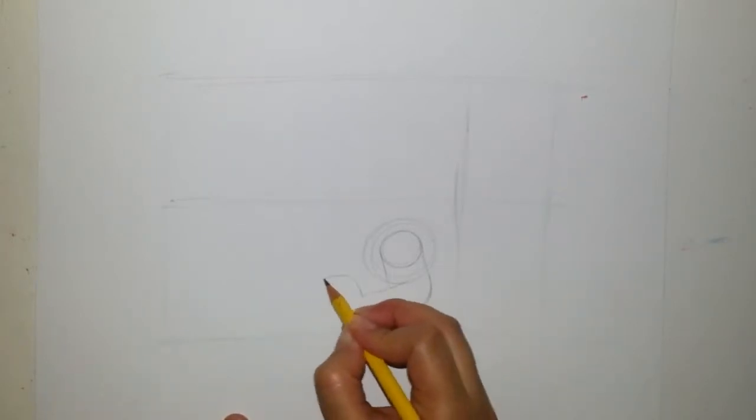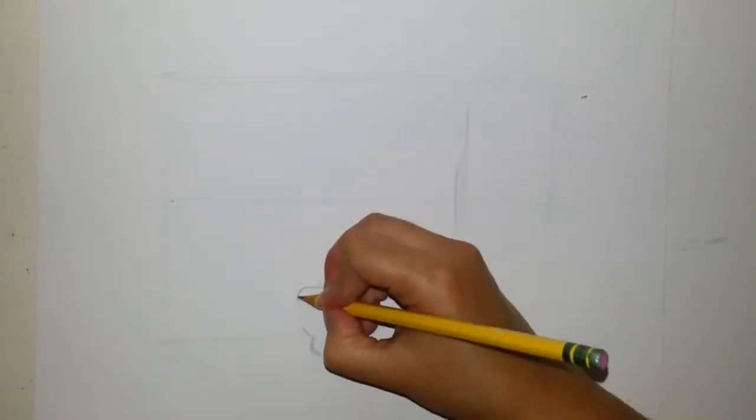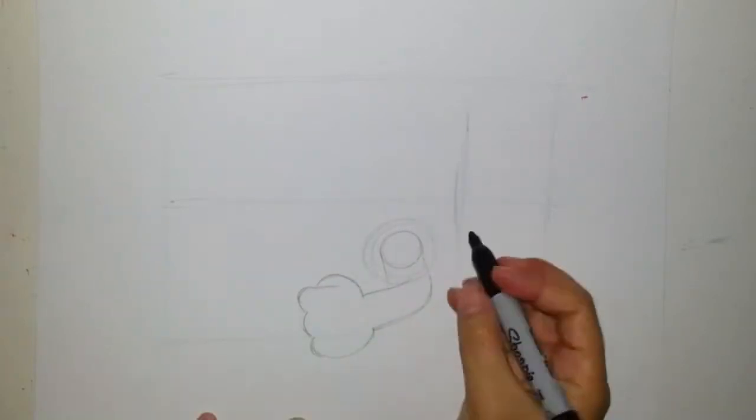Then we're going to draw the fist, and it's going to be three bumps and then one bump on the side for the thumb. Now for the arm, we're going to color it first with marker because it's the first thing that is on top of the bullet.